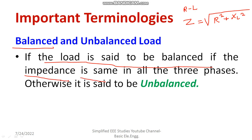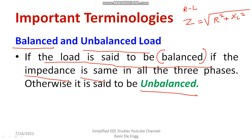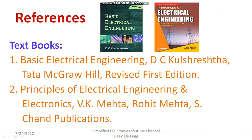If the load is said to be balanced, the impedance of each phase will be the same. If you measure the impedance of each phase, it will be equal. Conversely, if the load is said to be unbalanced, the impedance of each phase is not equal — such loads are generally termed as unbalanced load.